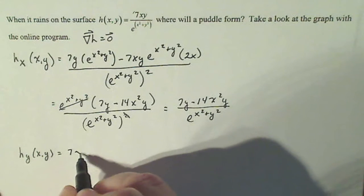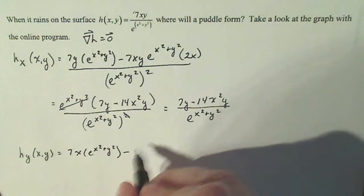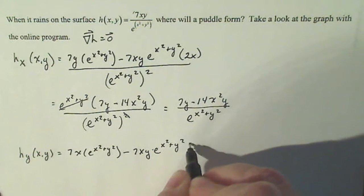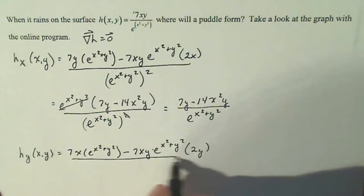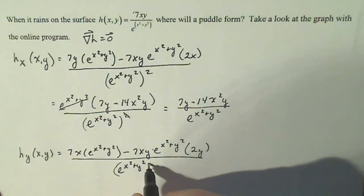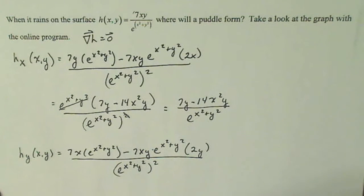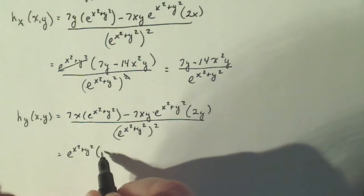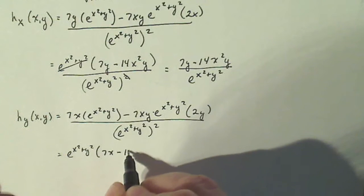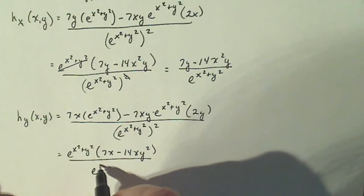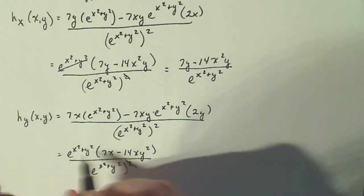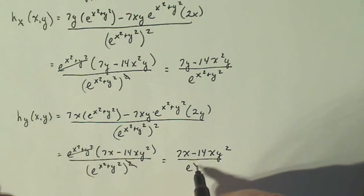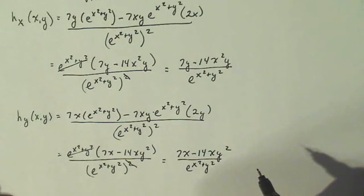Derivative of the top times the bottom, minus the top times the derivative of the bottom. The bottom is the exponential itself times the derivative of the power with respect to y, which is 2y. All over e to the x squared plus y squared, squared. In each term there's an e to the x squared plus y squared, so factor it out and simplify: e to the x squared plus y squared times the quantity 7x minus 14xy squared, all over e to the x squared plus y squared squared. One of those cancels, leaving h sub y equals 7x minus 14xy squared divided by e to the x squared plus y squared.